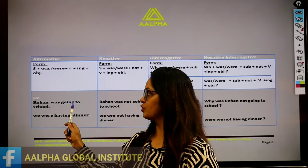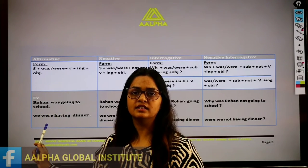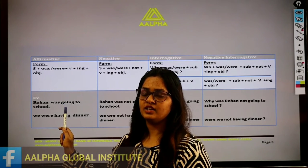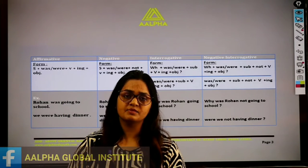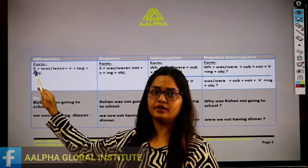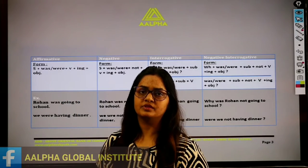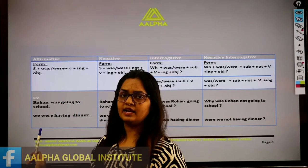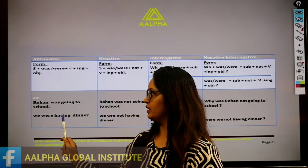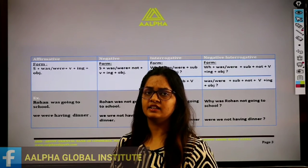For example: 'Rohan was going to school.' — Rohan school ja raha tha. Here 'go' is the base form, and we add -ing to make 'going'. First put the subject, then was/were according to subject, then verb + -ing form, then the object. It is very simple sentence construction. Second example: 'We were having dinner.' — Hum dinner kha rahe the. Clear?